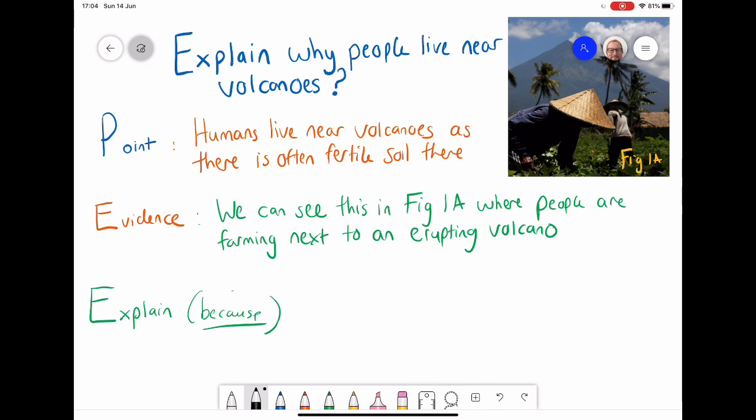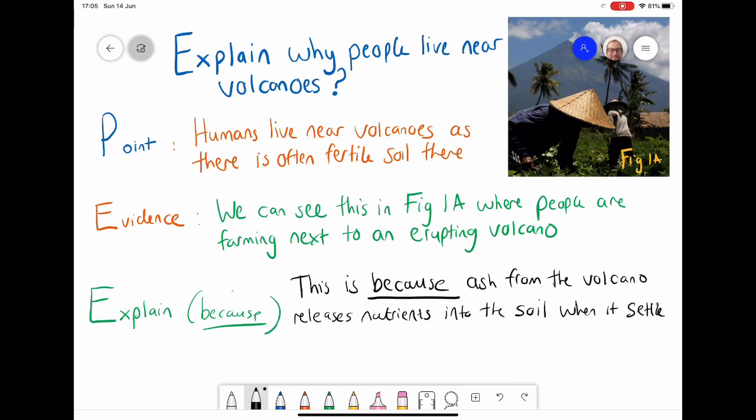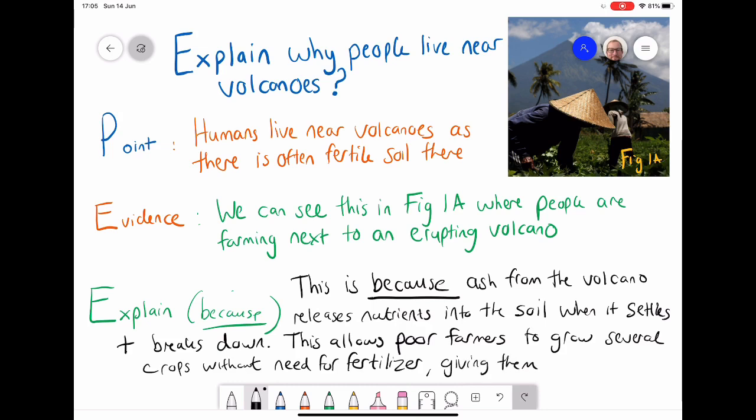The key bit of the explain answer is the last bit. This is where we've given our point, we've given some evidence. But now we need to say, well, why is this happening? We're looking for that word because, and I've underlined it because that shows me I'm giving a reason. This is because the ash that's coming from the volcano, when it actually lands on the ground and settles, and after a while it breaks down, that actually releases nutrients into the soil. Because of this, this is often a good place for the poorest farmers to be able to grow crops and sometimes several crops a year without the need for fertilizers. Therefore they can get high yields and make good profits from it. This is the highest level of answer you would probably get for an explained question. You don't necessarily have to have it in that much detail, but as long as you're saying this is because ash releases nutrients and it allows farmers to grow several crops on it, that would get you enough marks in an exam.